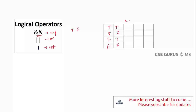For logical AND, if both values are true then only the result is true; otherwise it is false — if any one is false, the result is false. For logical OR, if both are false then only the result is false; if any one is true the result is true.